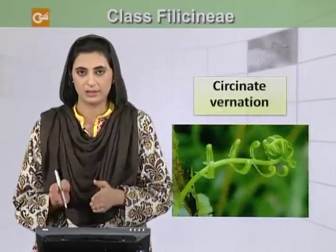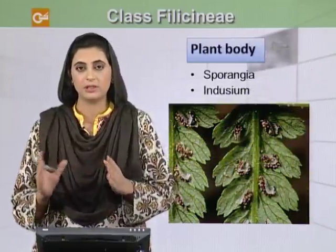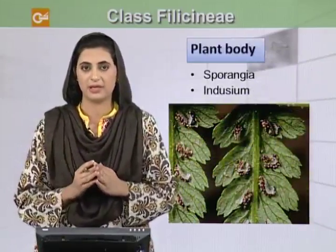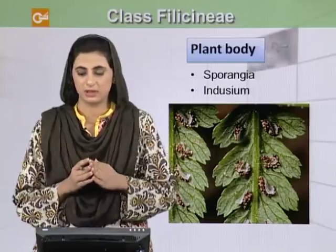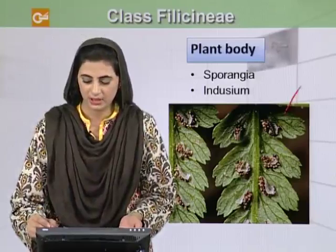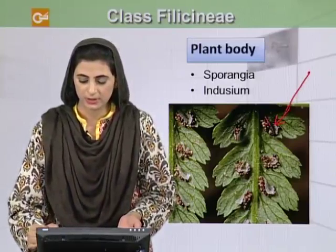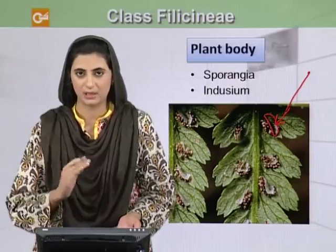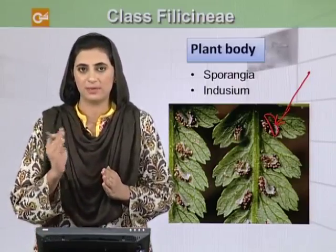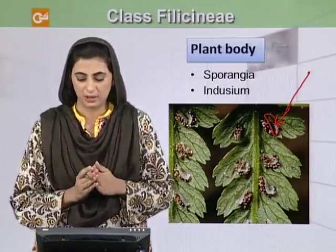You can see the circinate vernation here. If we see the plant body, it has sporangia on the underside of the leaf. The underside of the leaf bears sporangia, and the covering of sporangia is called indusium.